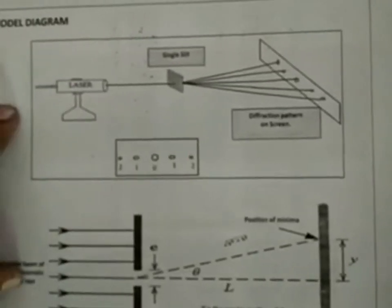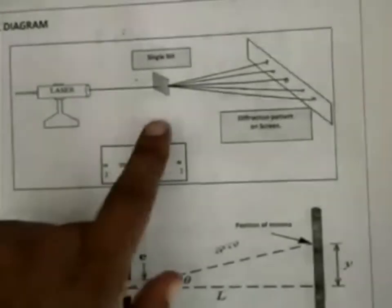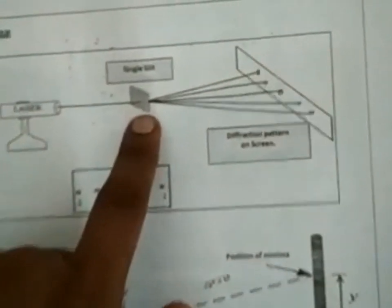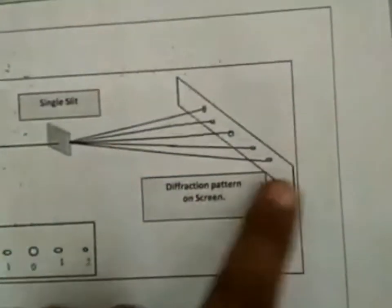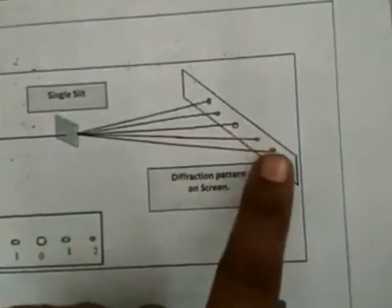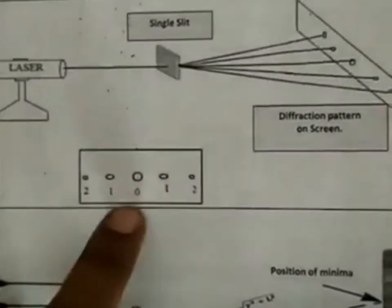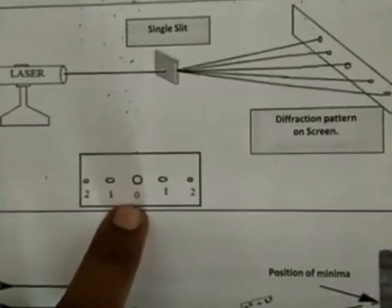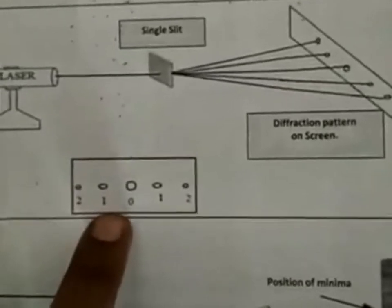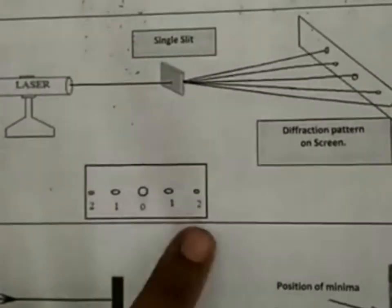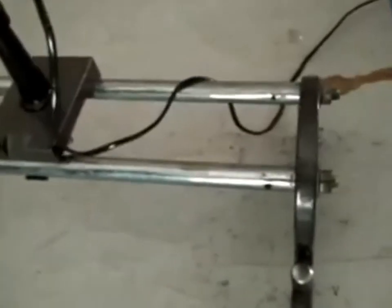This is the model diagram for the experiment. This is the monochromatic laser source, this is the single slit, and these are the diffraction fringes formed on the screen. In place of a screen, we are using a graph paper for recording the diffraction pattern. Here, 0 indicates the central maximum; 1 and 1 on either side indicate the first order principal maximum; 2 and 2 indicate the second order principal maximum on either sides of the central maximum.